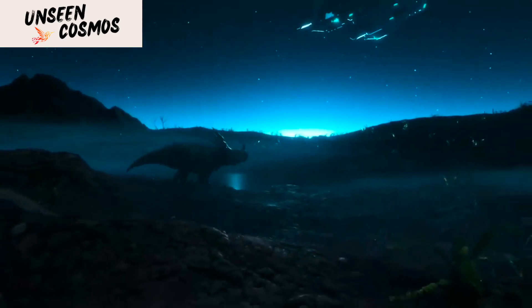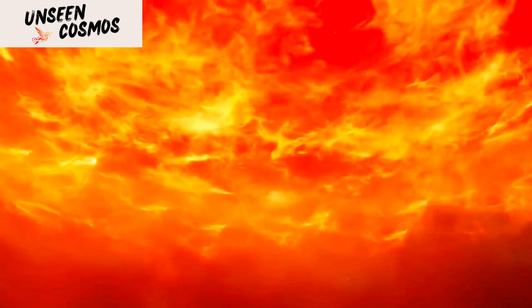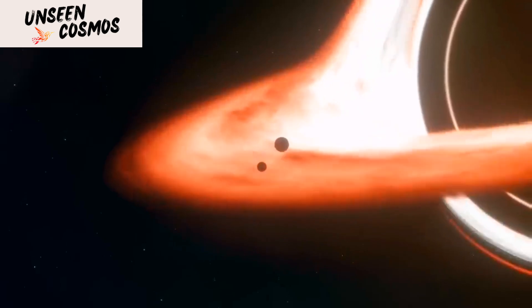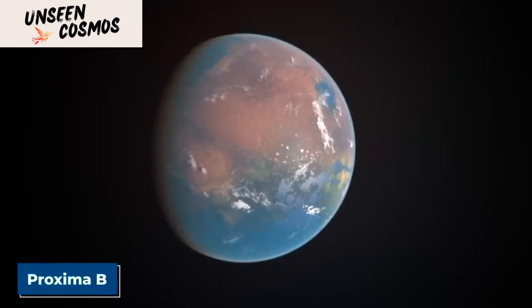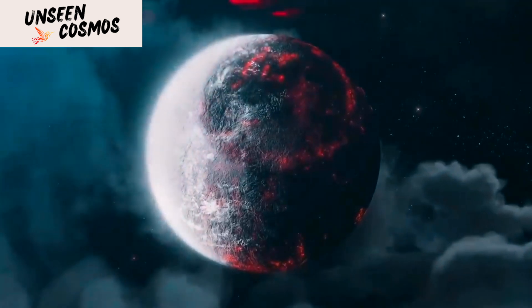One of its primary objectives is to search for signs of life on other planets. Recently, there has been speculation that the telescope has detected artificial light on Proxima b, a potentially habitable exoplanet orbiting Proxima Centauri, the nearest star to our solar system.